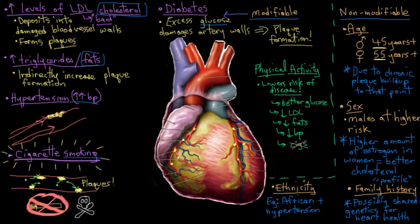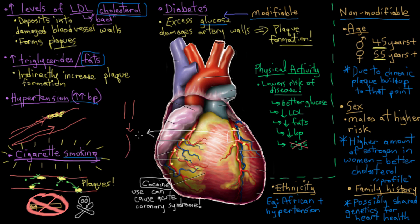One more interesting tidbit: another reason you might get acute coronary syndrome, beyond atherosclerosis, is cocaine or amphetamine use. What cocaine can do to your coronary vessels is cause them to vasospasm — meaning it causes your coronary arteries to clamp down and close off. That's obviously not going to let blood through, so in that way it approximates a plaque: it compromises blood flow downstream and causes acute coronary syndrome. So that's probably another thing to avoid.